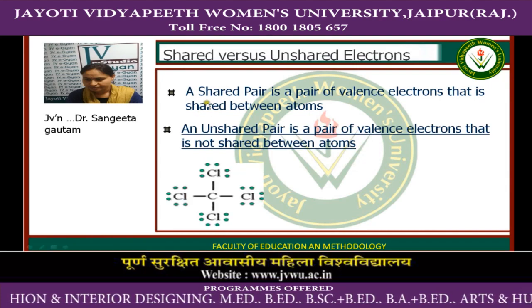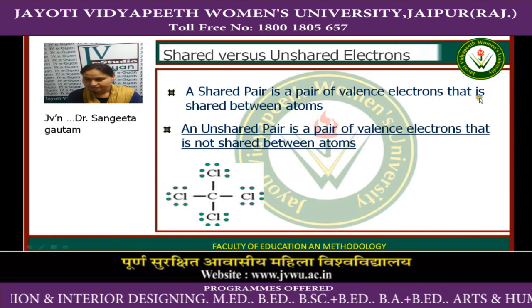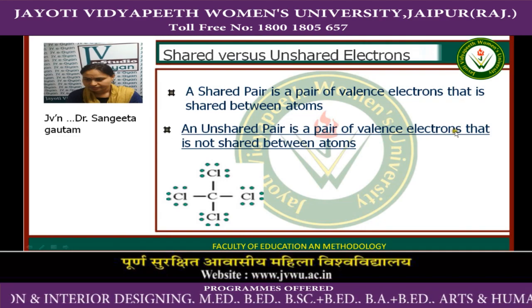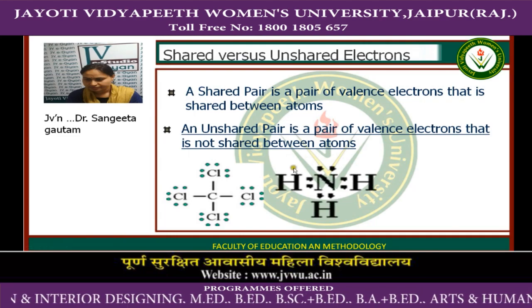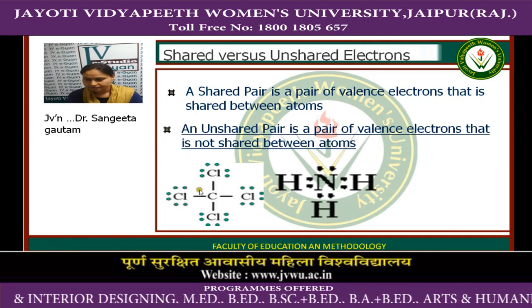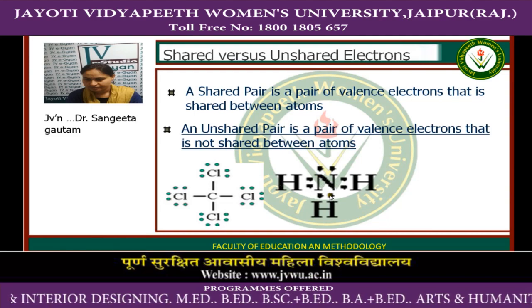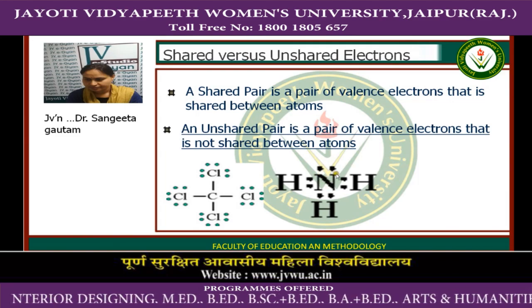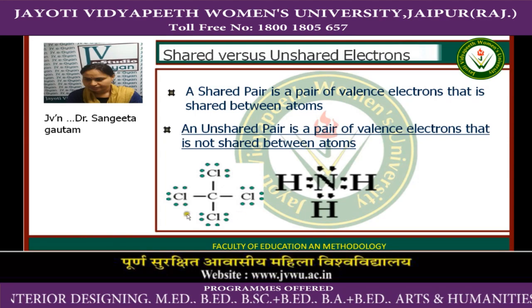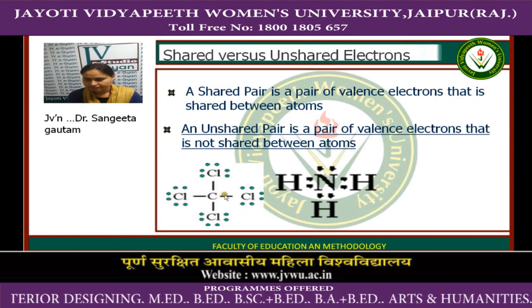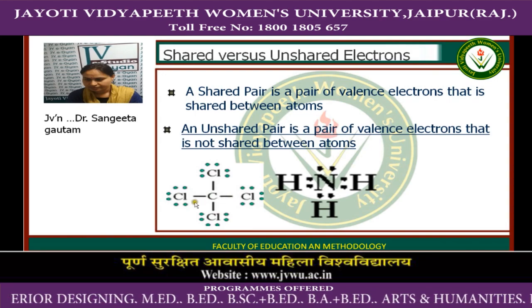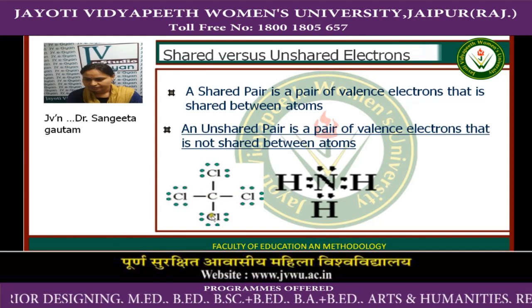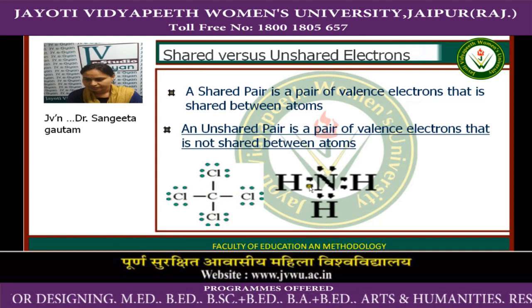Shared versus unshared electrons: a shared pair is a pair of valence electrons shared between atoms, and an unshared pair is a pair of valence electrons not shared between atoms. In the pictures, shared electrons and unshared electrons on the nitrogen atom are shown; unshared pairs are also known as lone pairs of electrons. In another picture, bonds show the shared electrons between carbon and chlorine, and the remaining are unshared electrons.